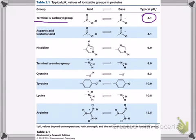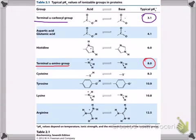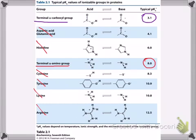The other group that could change is the terminal amino group, and it has a pKa of 8.0. Going back to the structure, I'll identify that group there. Looking at the chart again, the other amino acids listed don't apply to methionine, so those are the only two groups that could possibly change based on pH. Everything else would not change no matter what pH you draw them at. That's what this chart helps you with — it helps you identify the groups and tells you their pKa values.